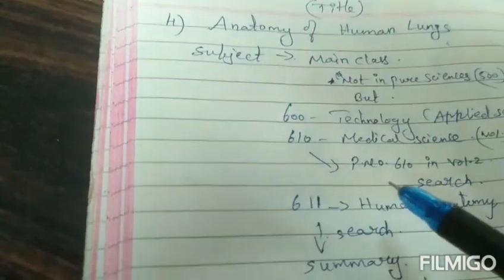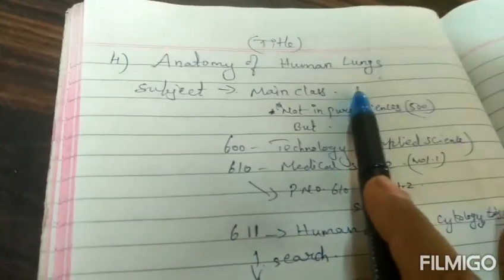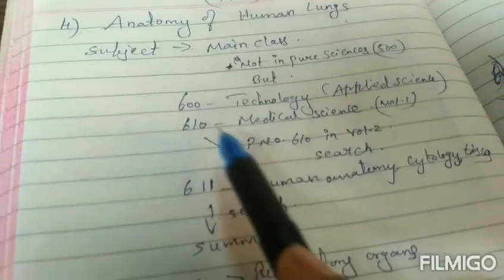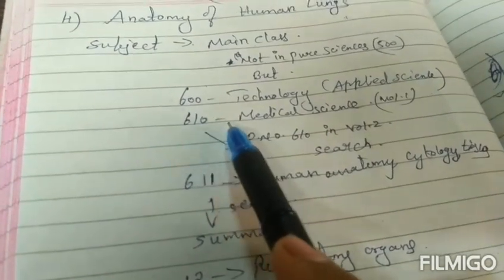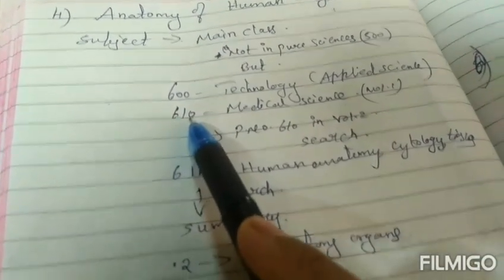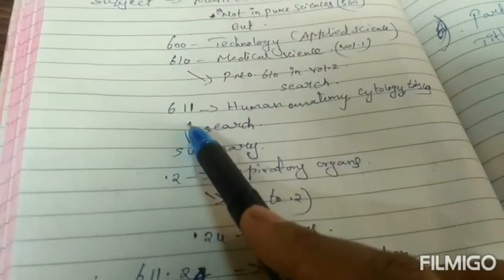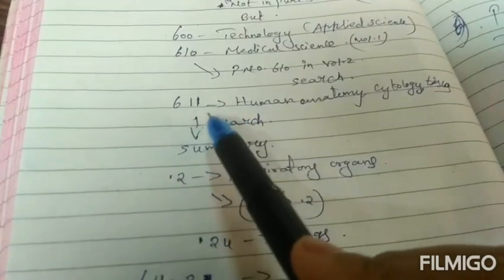In this you can get this. You will understand only by doing so many examples. If you keep on working out examples, then only you can find in which main class our title belongs to. So technology is applied science. In that, again if you check, you can get in volume 1 medical sciences in the number 610. Again go to page number 16 in volume 2, then you can see the subdivisions how it is divided.